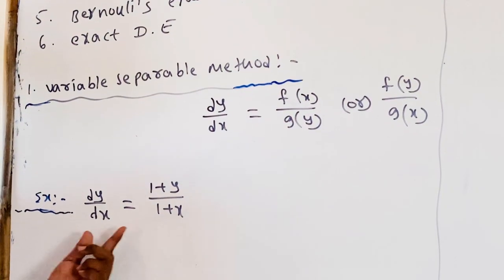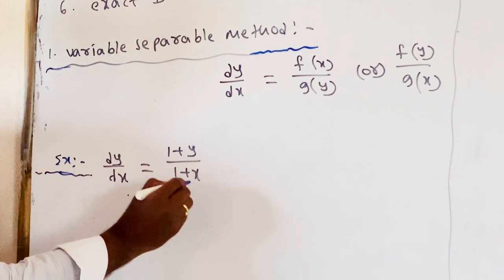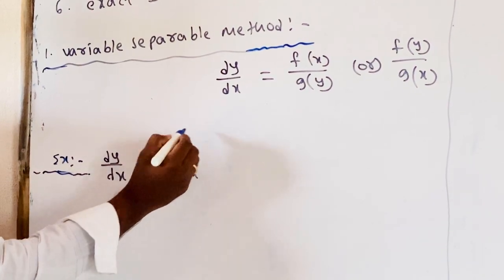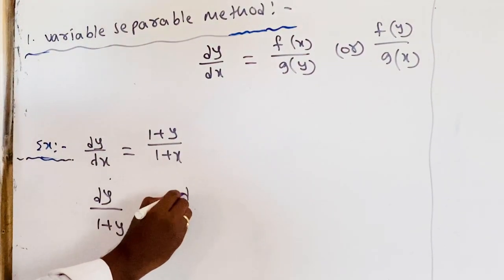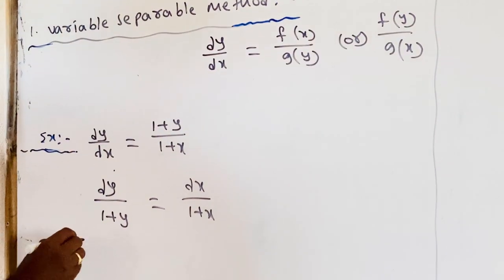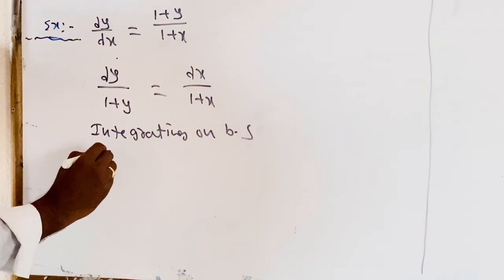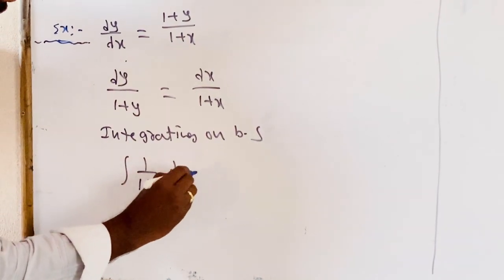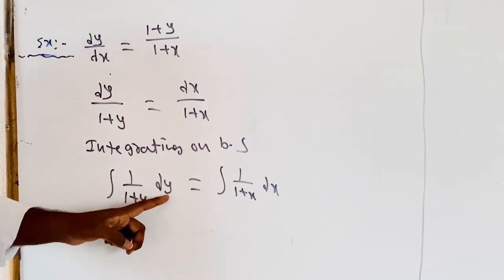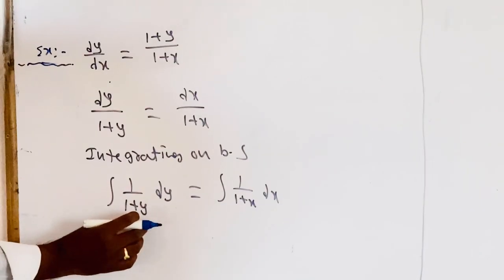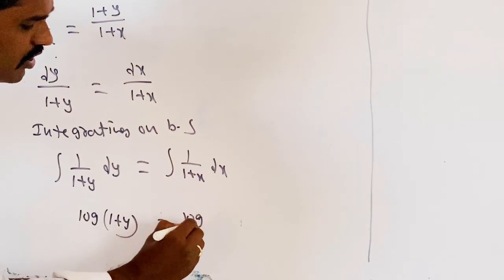We will go for one example: dy/dx = (1+y)/(1+x). By separating the variables, we get dy/(1+y) = dx/(1+x). Integrating on both sides, the integral of 1/(1+y) dy gives log(1+y), and the integral of 1/(1+x) dx gives log(1+x).